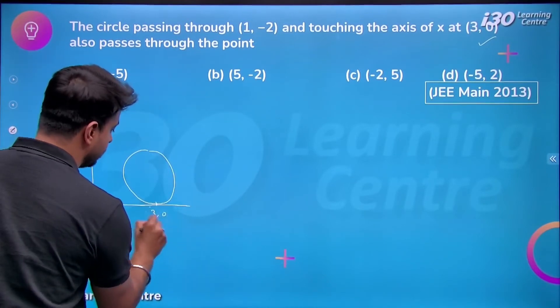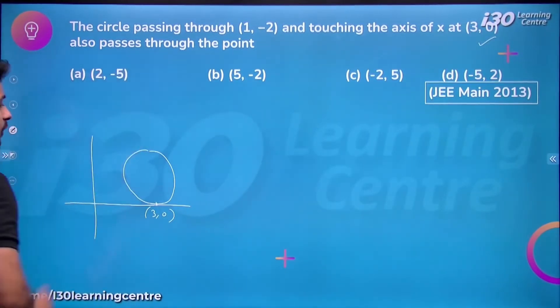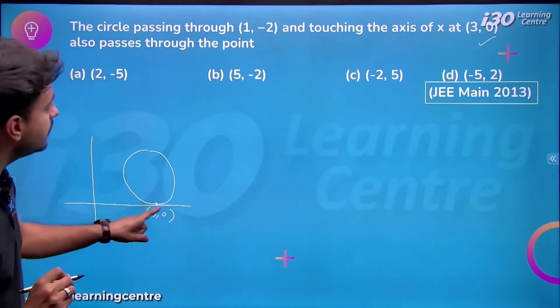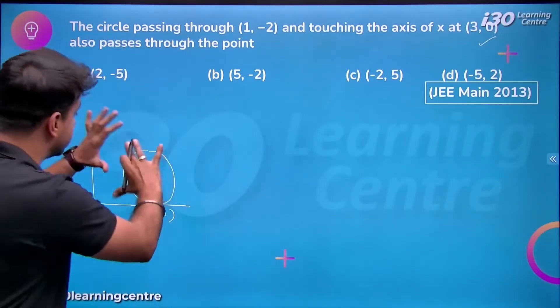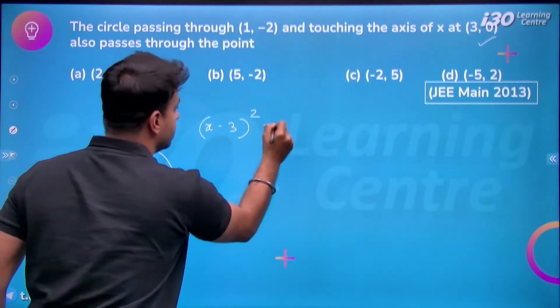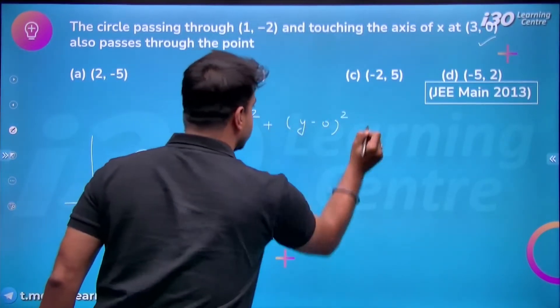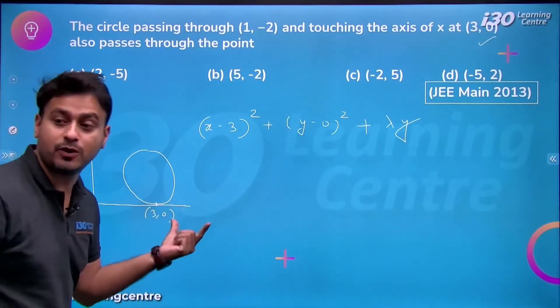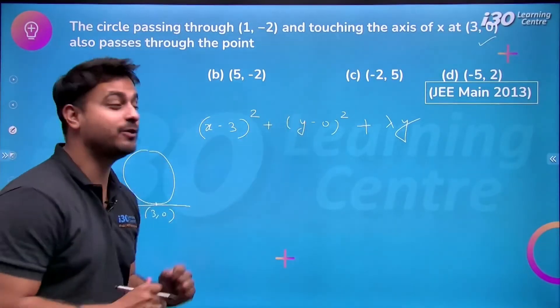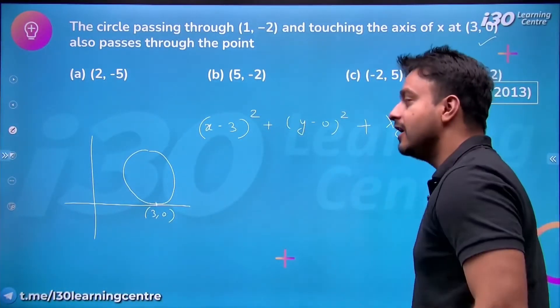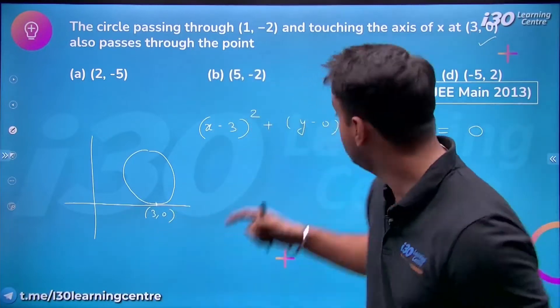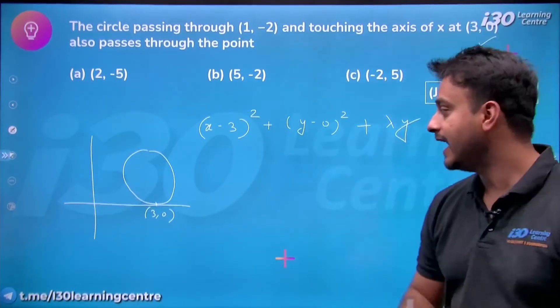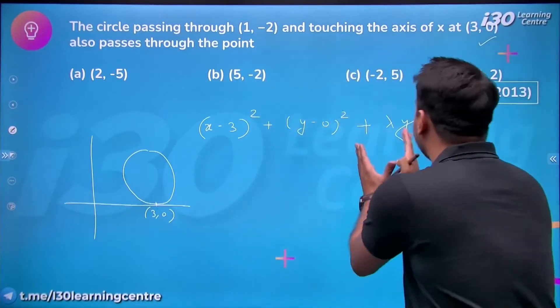The basic way to solve this is: I am going to assume the equation of the circle as (x - 3)² + (y - 0)² + λy, because the x-axis where y = 0 is tangent. This is the way we write the equation of the circle. We study this in system of circles. If there was another line like x + y, it would be λ(x + y), but since this is the x-axis with equation y = 0, that's why we write λy. The circle passes through (3, 0), so this is how we write the equation.